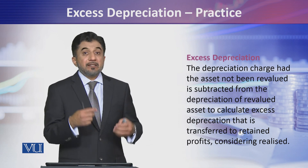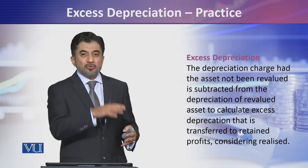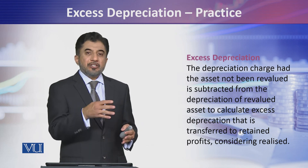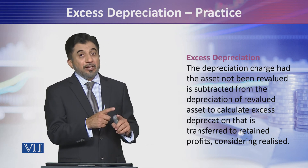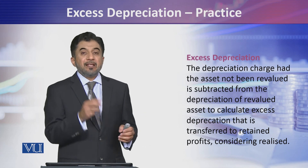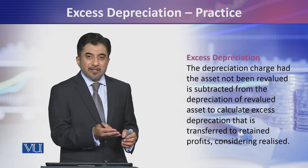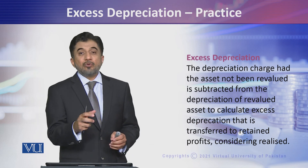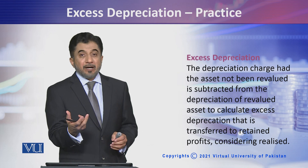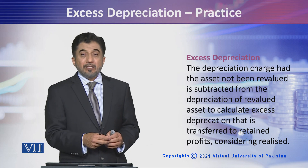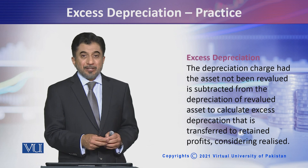We also say that the revaluation surplus has been 'realized' — it is transferred to retained profits. Whatever goes into retained profits becomes available for distribution to equity shareholders, which is why we use the term 'realized.' The portion still remaining in revaluation surplus is called the unrealized part, which is shown in the statement of other comprehensive income.